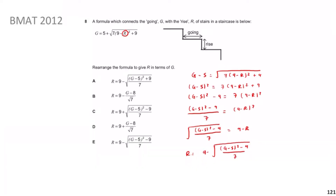One thing I forgot to add: when I took the square root in the step before, there should actually be a plus or minus — remember, when you square root something you get both a positive and a negative version. So then minus R becomes R when shifted, and the 9 becomes a minus-plus (the signs switch). So if it was plus it'd be minus on the other side, and vice versa.